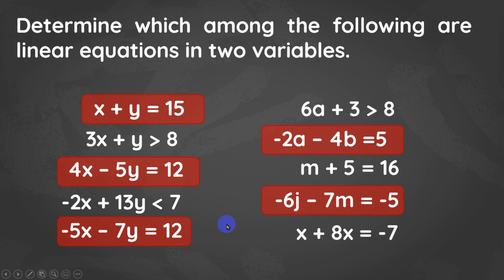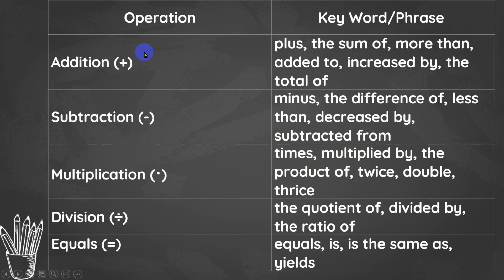These are some keywords or phrases to remember for correct translation of linear equations in two variables. For addition, keywords are: plus, the sum of, more than, added to, increased by, the total of. Once you read these words, the operation is addition. For subtraction, we have: minus, the difference of, less than, decreased by, subtracted from.